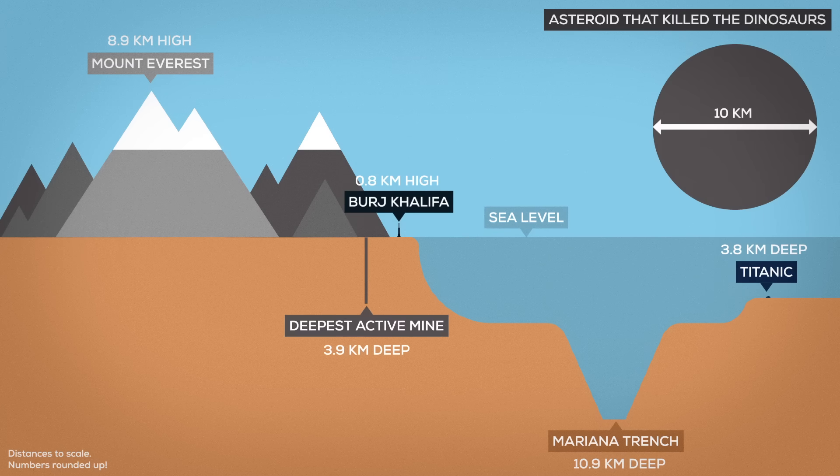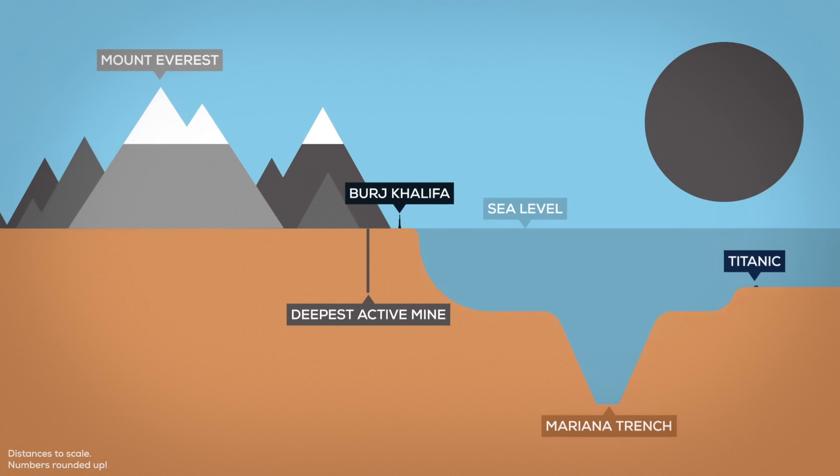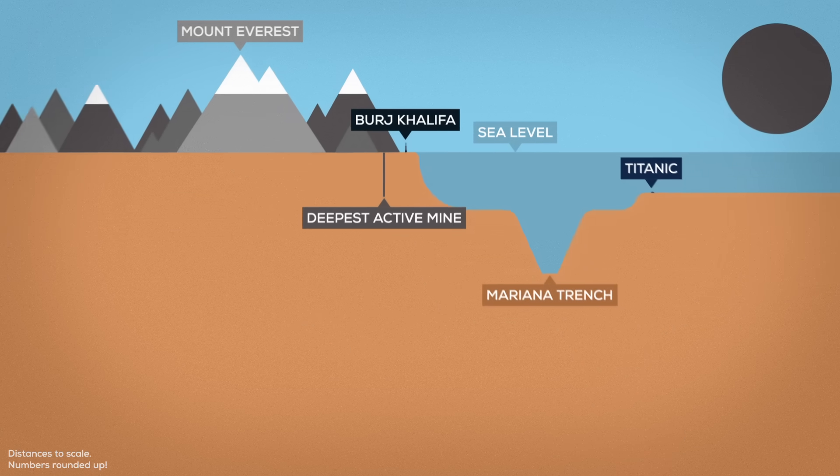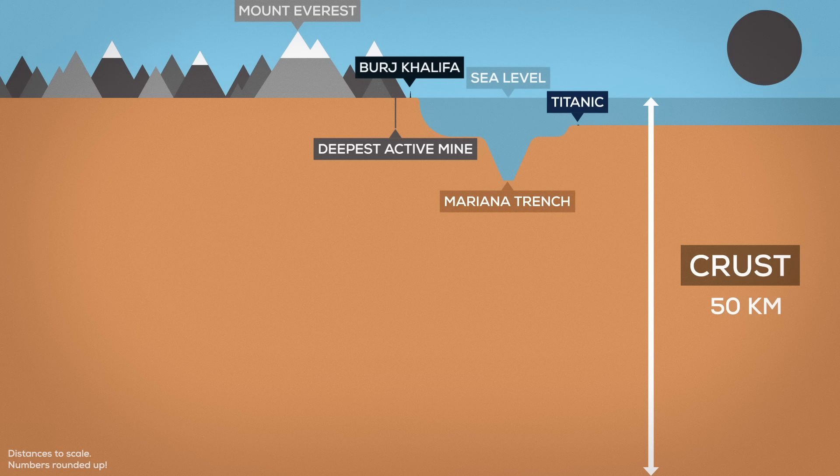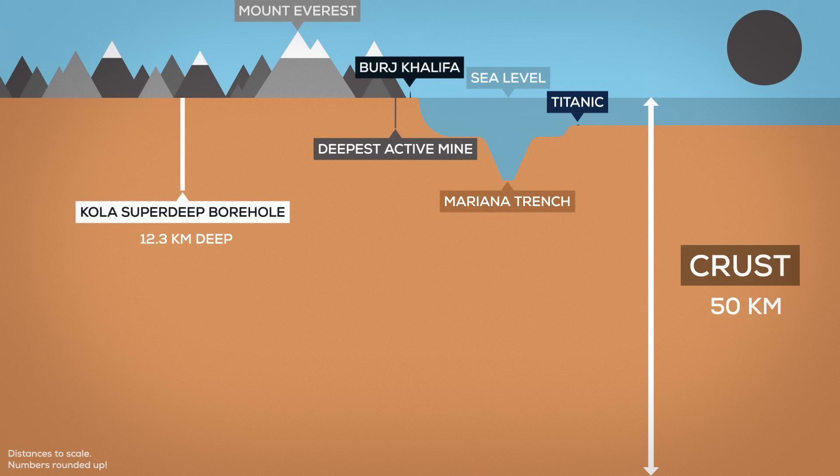From our perspective, Earth's mountains and trenches are mighty indeed. But when you look at the Earth in cross-section, you can see how tiny they actually are. The part we stand on is the crust, which is about 50 km thick, though it can vary between 5 and 70 km. By the way, the deepest hole ever drilled by man is 12.262 km deep.